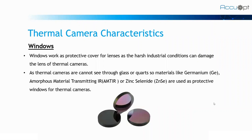Then we have windows. Windows are basically used as a protective cover for the lens, as harsh industrial conditions can damage the lens and even cause internal damages. Since thermal cameras cannot see through regular glass or quartz, special materials like germanium windows, AMTIR windows, or zinc selenide windows are used. Where the temperature is not so high, we use the germanium window, but where the atmospheric temperature is around 300 degrees Celsius, we use the zinc selenide (ZnSe) windows.